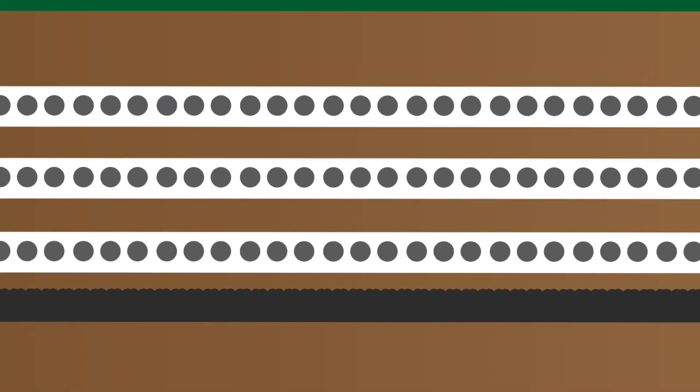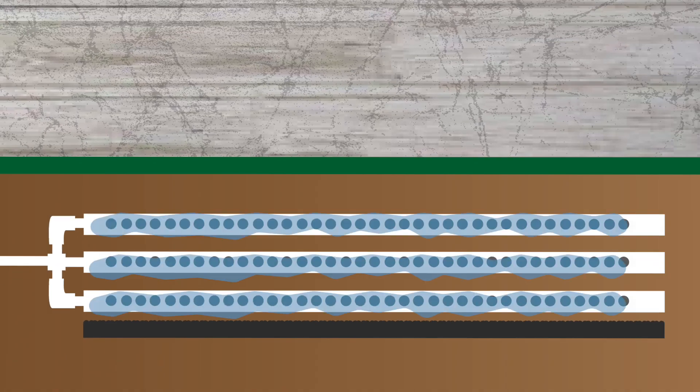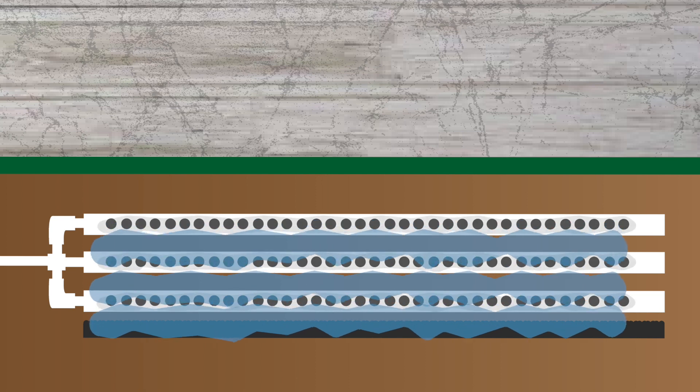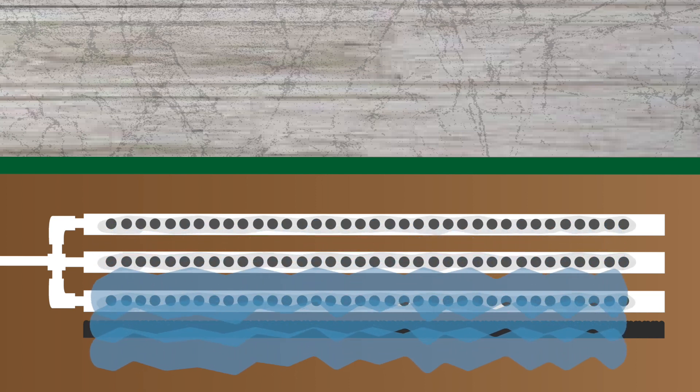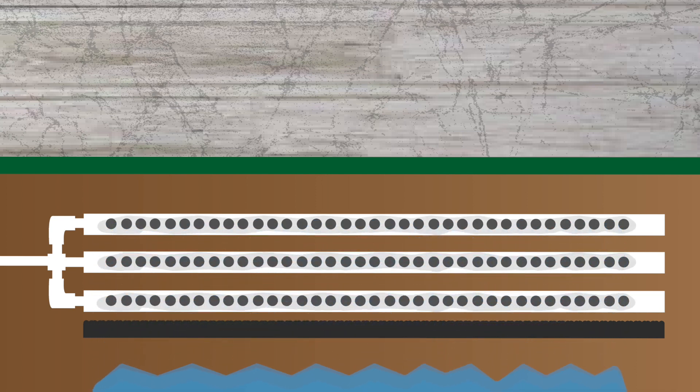Once the liquid exits through the lateral lines and passes through the bio-mat, it seeps into the soil and eventually makes its way back into the groundwater as clean water.